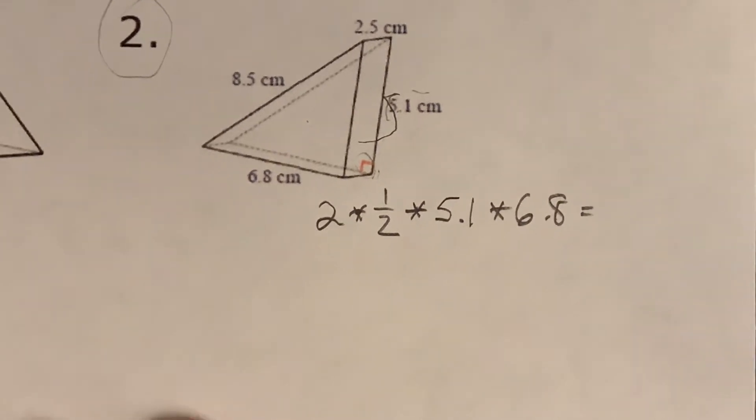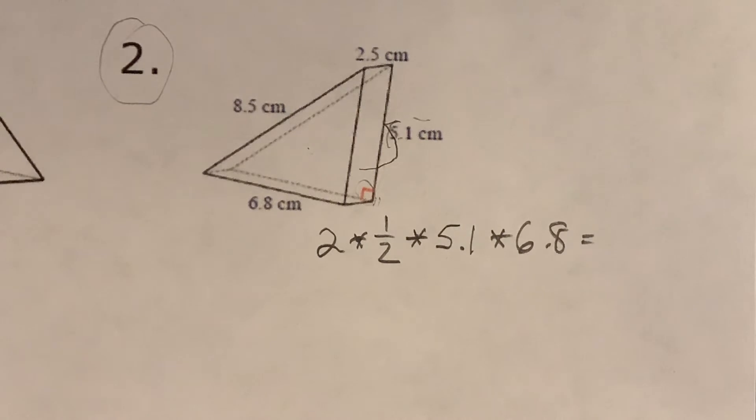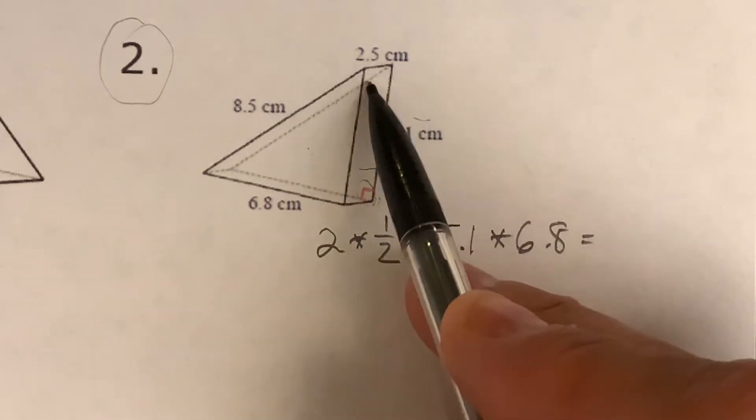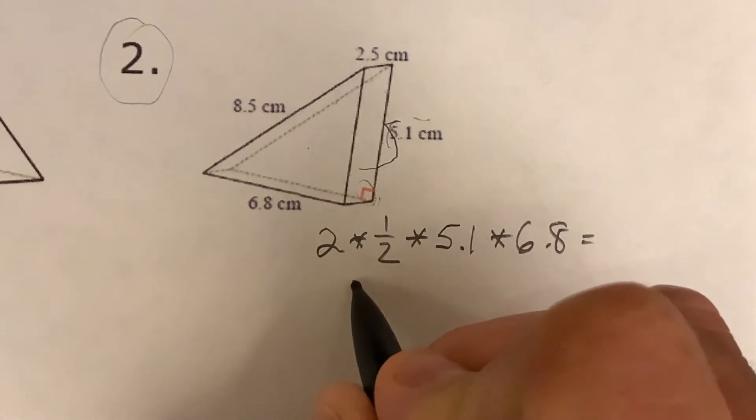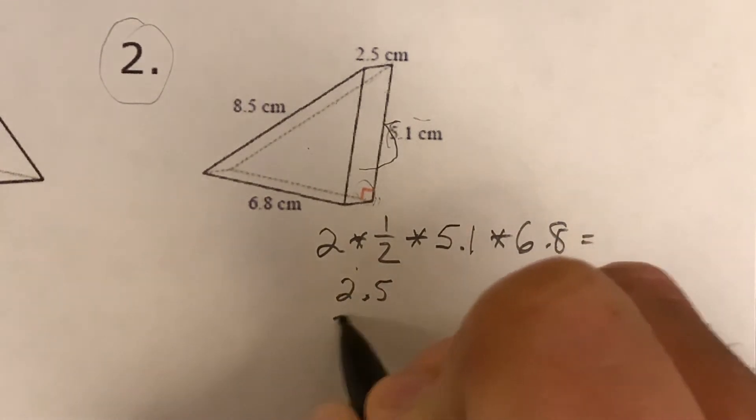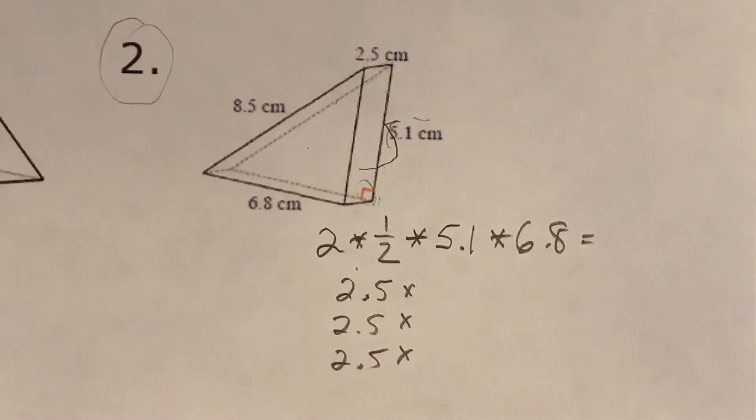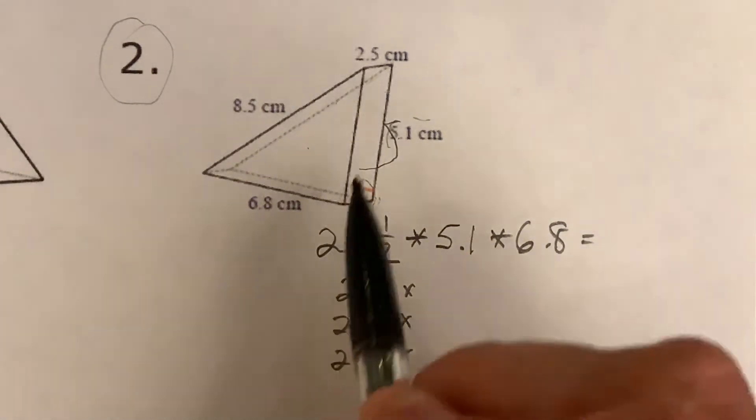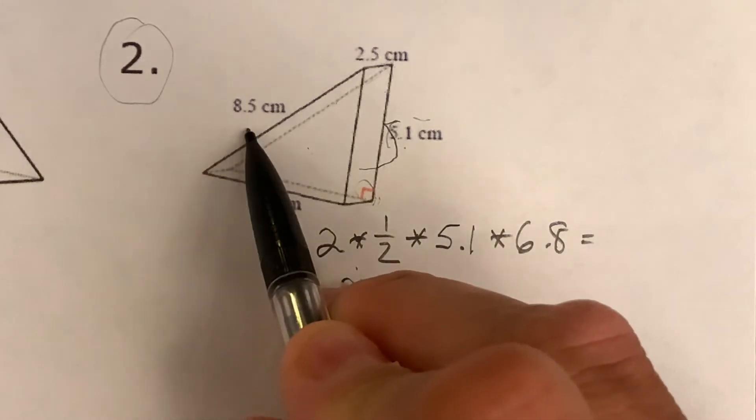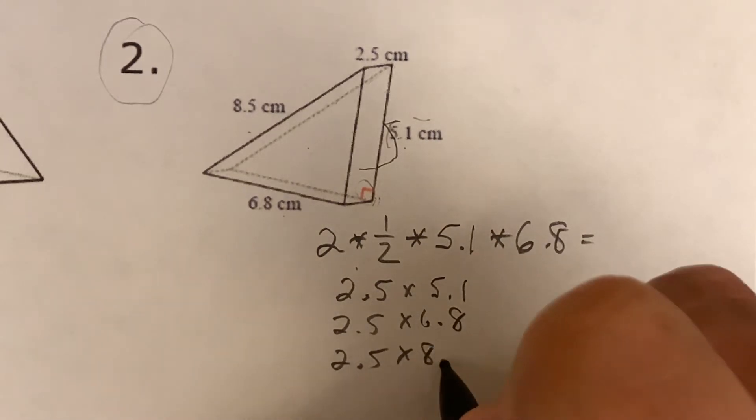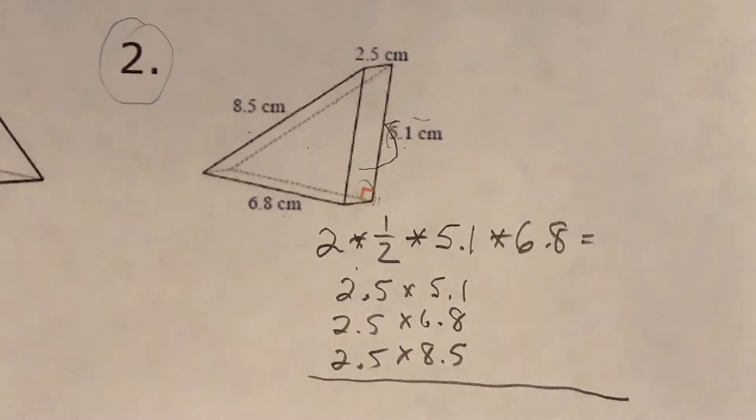Which would be the 5.1 meeting at a right angle with the 6.8. So 5.1 times 6.8. That's going to take care of the two triangles. Okay, now we got to figure out what we're going to do with the three rectangles. This is kind of how I do it: the three rectangles all have the same size side, and it's the distance between the two triangles.